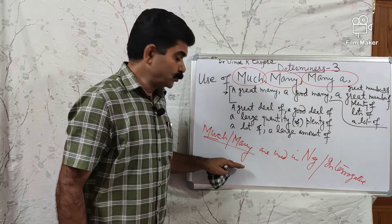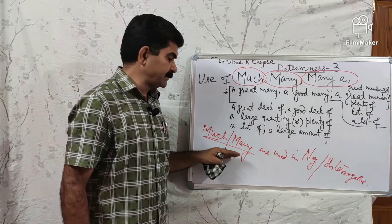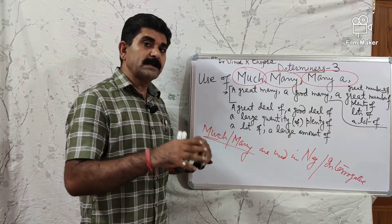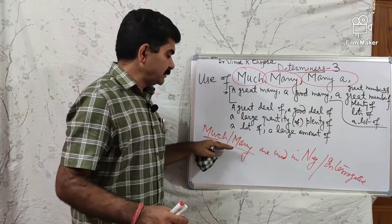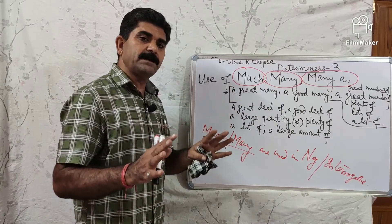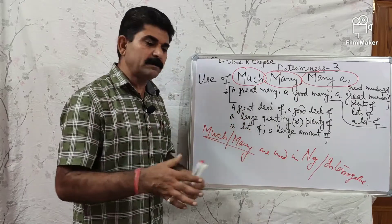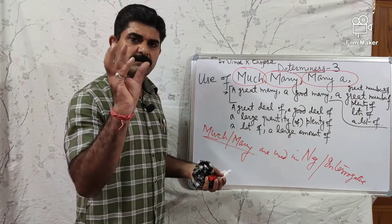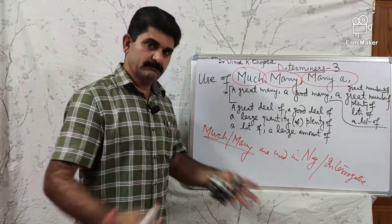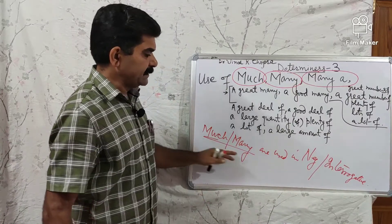You might say, 'Sir, we had the same problem with any.' The difference is: with any, you are not talking about a large number of anything, but with much and many, you want to suggest a large number or large amount. Many means a lot — bhoh jyada. Some is less; when we say much, it means a large amount.